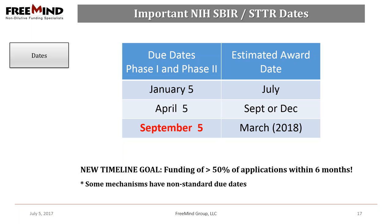The standard due dates for SBIR and STTRs are every four months: January 5th, April 5th, and September 5th. It usually takes around four months to get an initial review and another four months — a total of eight months from submission — until you see the money. The NCI's SBIR Development Center is working hard to reduce this to six months. The September 5th deadline is right around the corner, so now is the perfect time to start working on your SBIR and STTR applications. Some solicitations have non-standard due dates, so read each solicitation carefully and pay attention to the details.